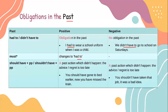'Should have' plus past participle, or 'shouldn't have' plus past participle, expresses a past action which didn't happen — the advice or regret is too late. Example: 'You should have gone to bed earlier. Now you have missed the train.' Negative: 'You shouldn't have taken the job. It was a bad idea.'